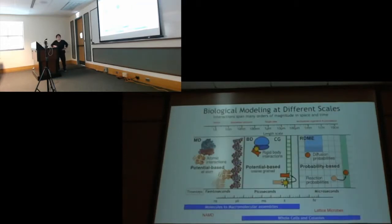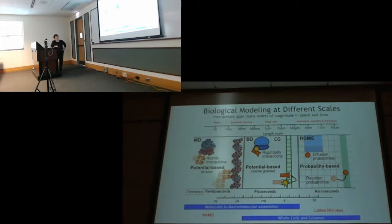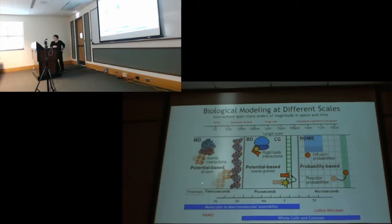So far you've heard about three different levels of modeling, each at different scales. At the beginning of the week, you heard about all-atom simulations — molecular dynamics with the NAMD code. Those are very good for problems from angstroms up to about 100 nanometers. The main challenge is the yin-and-yang between size of the system and simulation time. With NAMD, the time step is femtoseconds. For a more coarse-grain, rigid-body simulation, you can introduce Brownian dynamics, which allows somewhat larger time steps.